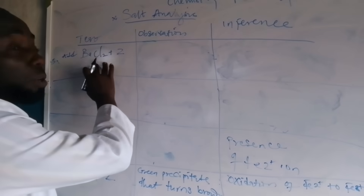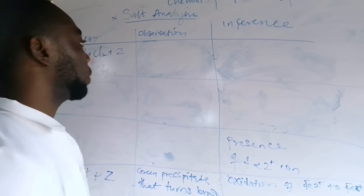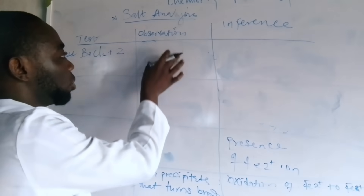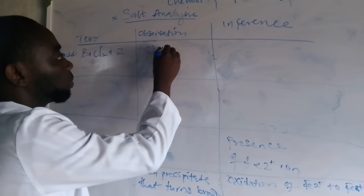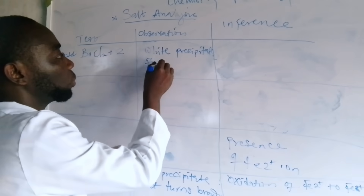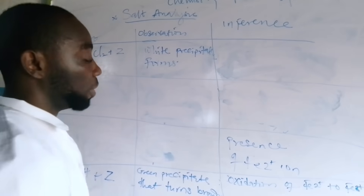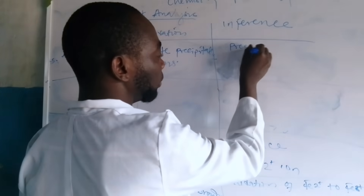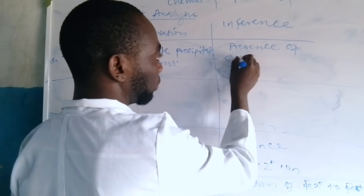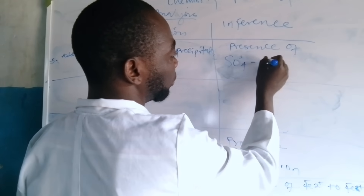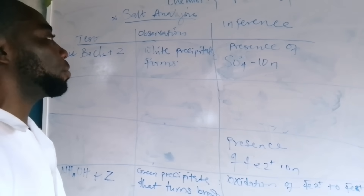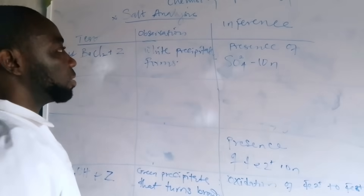Add barium chloride to Z. Under the observation: white precipitate forms. Under the inference: presence of sulfite ion.